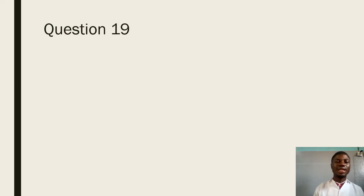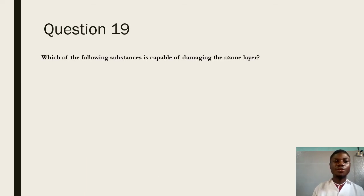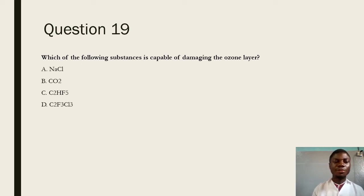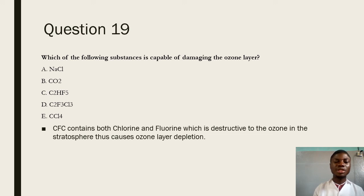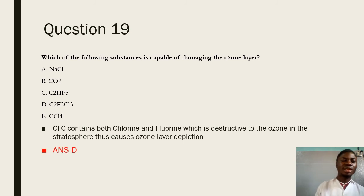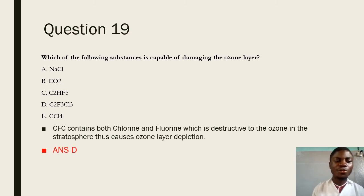Question 19 says: which of the following substances is capable of damaging the ozone layer? From the alternatives, we know that chlorofluorocarbons contain both fluorine and chlorine, which are destructive to the ozone found in the stratosphere, causing ozone layer depletion. The best answer is D, chlorofluorocarbons.